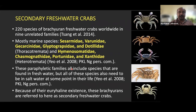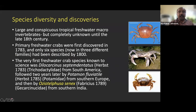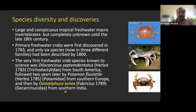Regarding species diversity and discoveries, crab taxonomy research does not have a very long history. The first freshwater crab was described from South America in 1783, and from 1783 to 1800, only six species were described. Interestingly, among the first three crabs described globally, one species, Oziotelphusa senex, was described in 1789 from southern India — meaning India was part of the earliest discoveries.